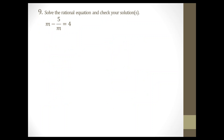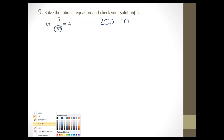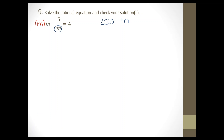Next: question number 9. I also wanted to mention — if you don't feel comfortable asking questions while we're recording, I will stay on after I stop the recording if you have questions, and I can answer privately. Question number 9 also says: solve the rational equation and check your solution. This one is similar to the previous one, so we use the same method. We multiply by the LCD, which is m. Multiply m by m, negative 5 over m by m, and 4 by m.